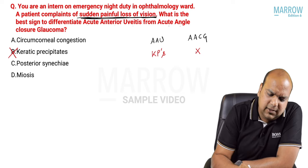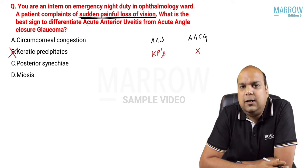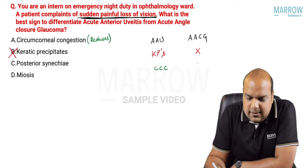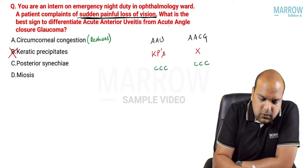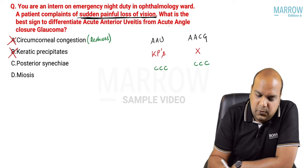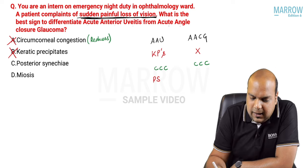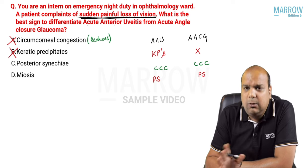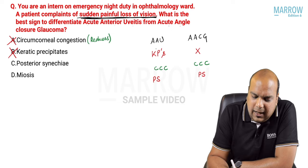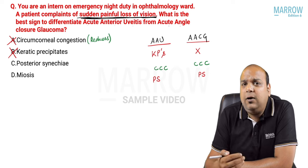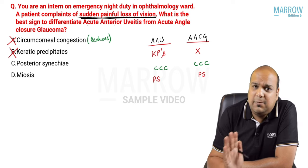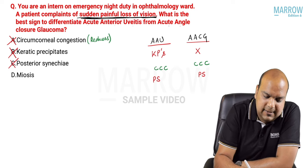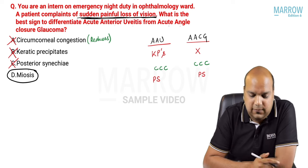You may have said circumcorneal congestion - but redness will be there in uveitis as well as glaucoma, so you cannot differentiate. Posterior synechia can be there in uveitis and also in acute angle closure glaucoma if it is an exacerbation of a long-standing case. Neither is useful. What is useful is miosis.